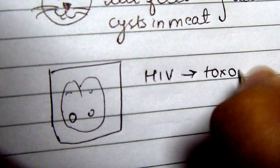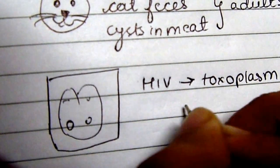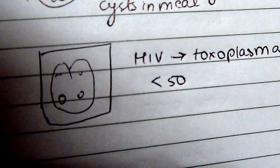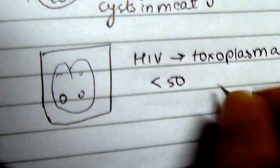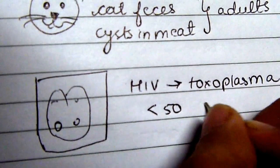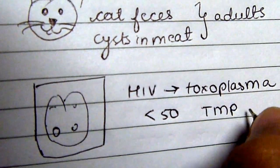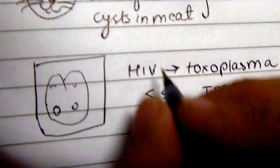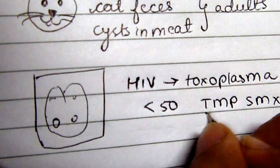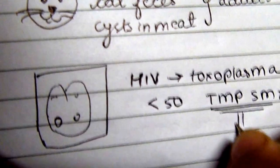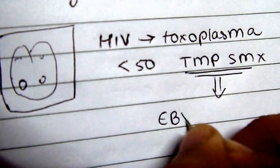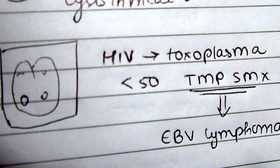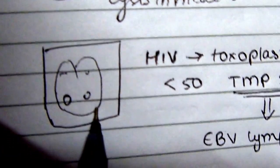But mostly in HIV patients you want to think of toxoplasma infection. That's when CD4 counts drop to less than 50, and you give prophylaxis for toxoplasma infection to HIV-positive patients by TMP-SMX. Sometimes HIV-positive patients do not get better with TMP-SMX, and that's when you think of an Epstein-Barr lymphoma as a differential of ring-enhancing lesions on the CT scan.